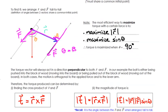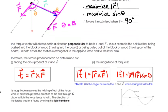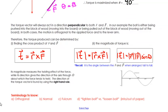Here are your two formulas. On the left: the vector formula for torque is R crossed with F. On the right: two magnitude formulas — one with theta and one without. You can use any of these three depending on what information you're given.